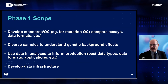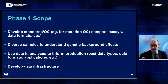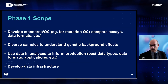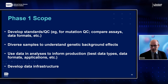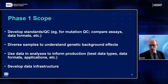Phase one will also have to develop standards — for mutation QC, assay comparison, and data formats. Comparing assays is a key activity for phase one because we need that information to know what to choose for phase two. The scale of phase one is enough to learn how to be systematic. One way to address diversity would be to sample a spread of populations among phase one assays, with some overlap in the genes tested between different population backgrounds. Another aspect of phase one is to start using the data in analyses to inform production and see how the data perform — the best data types, formats, and applications. There are always details about data that only become apparent once someone tries to use it. Finally, a phase one goal is to develop data infrastructure.